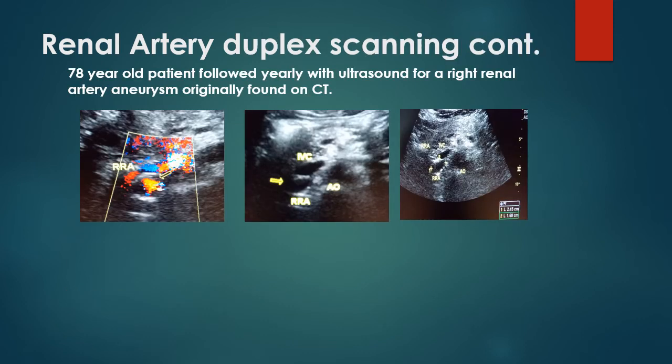Here is a 78-year-old patient followed yearly with ultrasound for a right renal artery aneurysm originally found on CAT scan. You can see the right renal artery aneurysm in this image, measuring approximately 2.45 by 1.68 centimeters. You can also see the aorta and IVC in relation to the renal artery aneurysm.